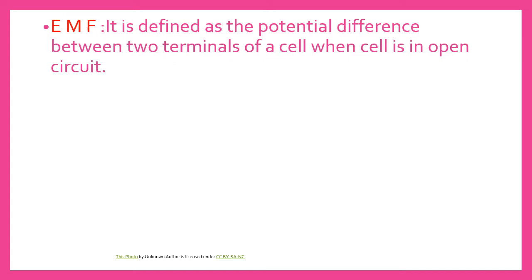This is what defines the EMF of a cell. EMF means electromotive force — that is its full form. It is not actually a force; it is a potential difference. It is defined as the potential difference between the two terminals of a cell when the cell is in an open circuit. When you take a new cell, you can write EMF as 1.5 volts or 1.67 volts.